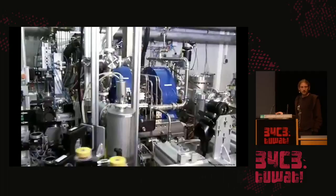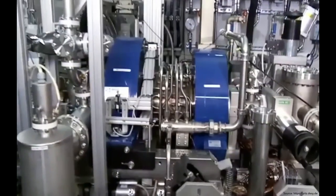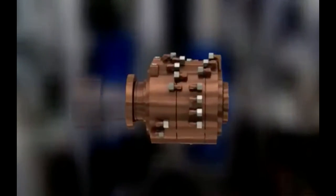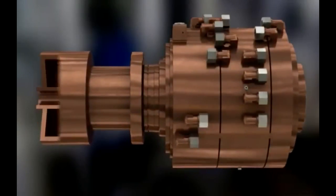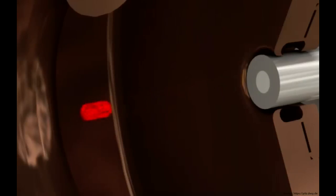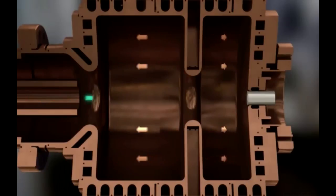Hier ist ein Film, den wir im Elektronen-Testzentrum in Zeuthen gemacht haben. Das ist eine sehr komplizierte Maschine, die nur dazu da ist, diese Elektronenquelle zu machen. Das Prinzip: Wir haben eine Fotokathode – wenn UV-Strahlung darauf trifft, werden Elektronen ausgestrahlt. Damit kann man so eine Million oder zehn Milliarden Elektronen machen. Wir haben hier zwei Zellen von diesen RF-Kavitäten, und das ist alles so synchronisiert, dass die Elektronen sofort beschleunigt werden, nachdem sie generiert werden.